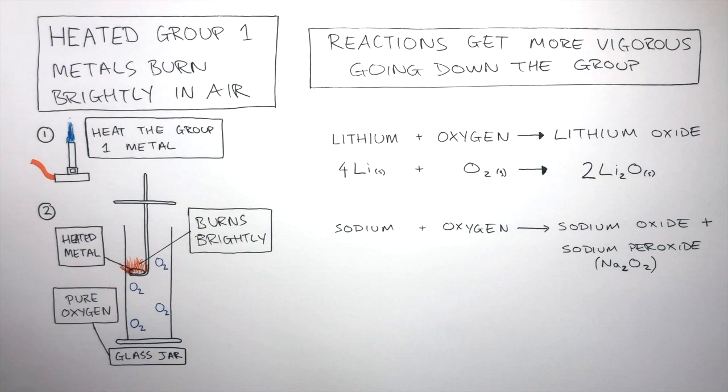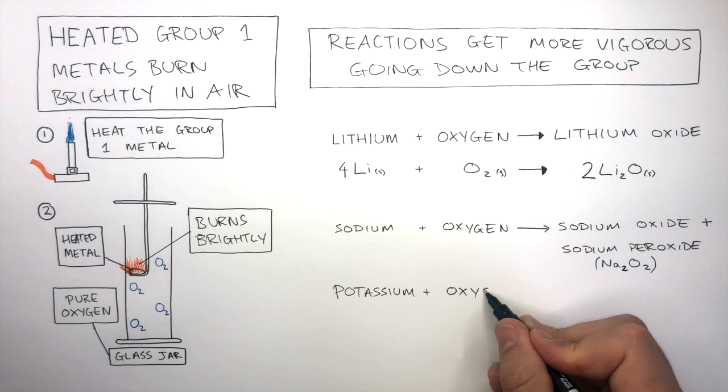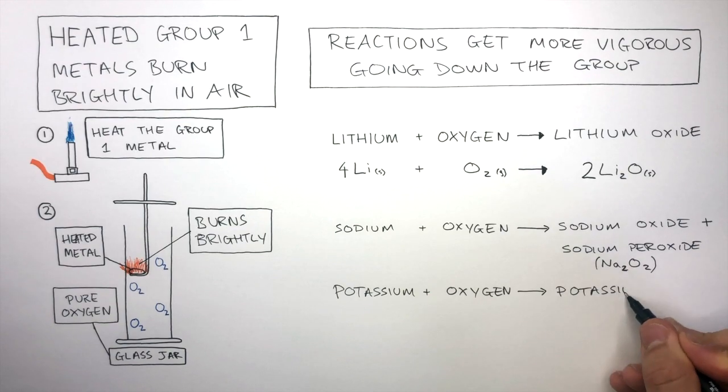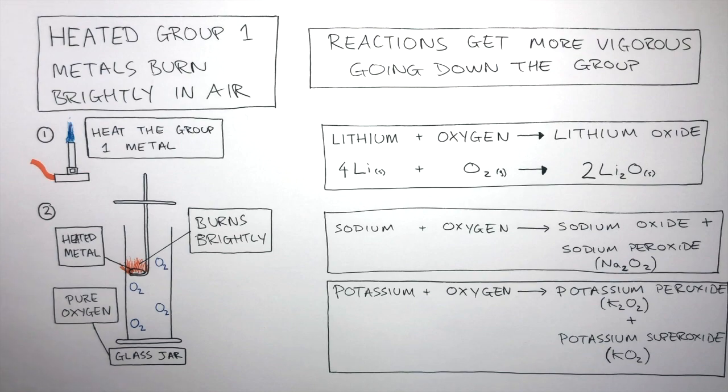Potassium is even more reactive so the products are a little different again. Potassium reacts with oxygen to form potassium peroxide which is K2O2 and potassium superoxide which is KO2. The products change because the group 1 metals get more reactive going down the group causing the reactions to become more vigorous.